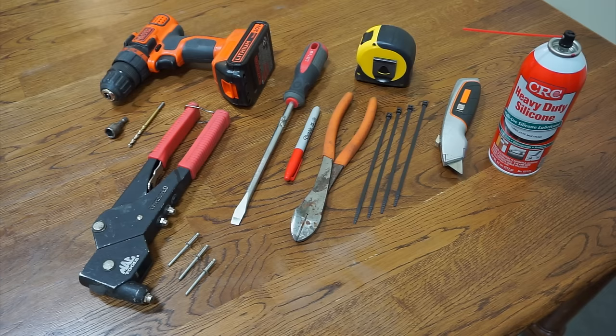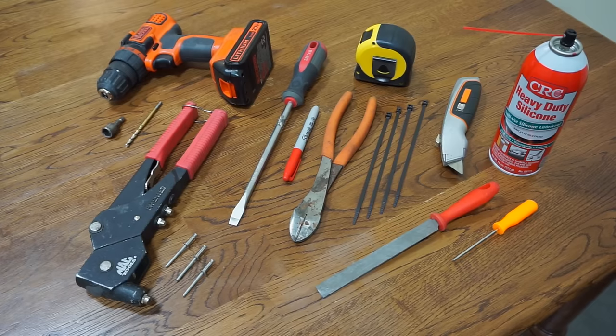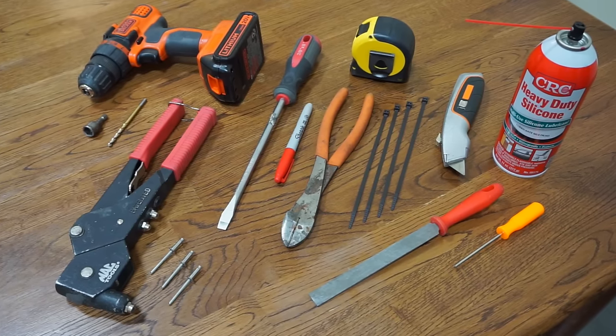Some zip ties, a razor knife, silicone lubricant, a file, and something to pin the roller tube with like this straight pick, which is available on the TuffTop Awnings website.